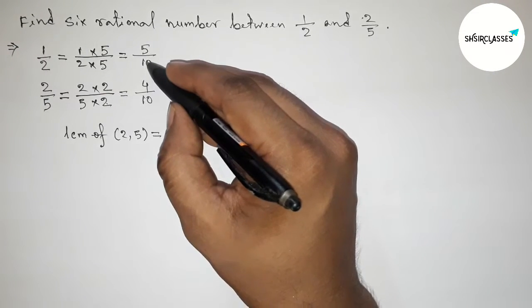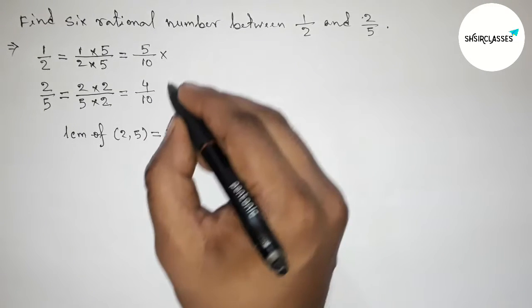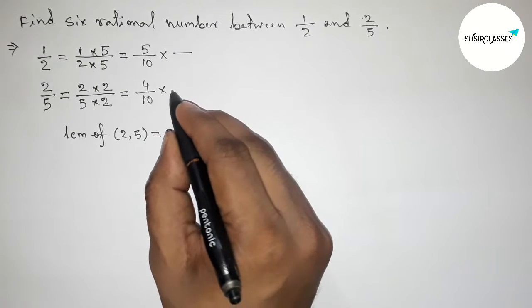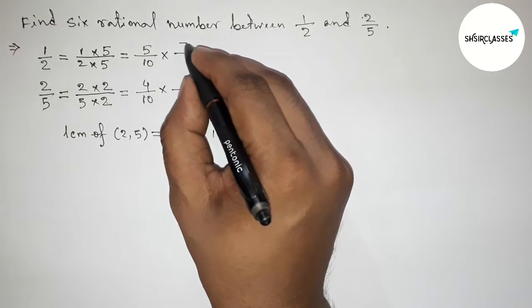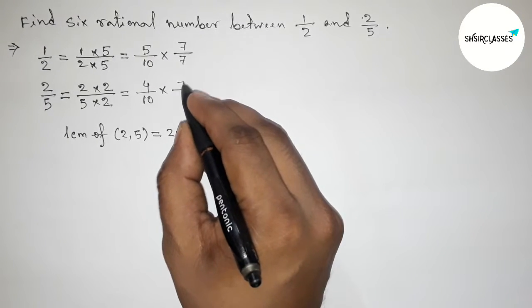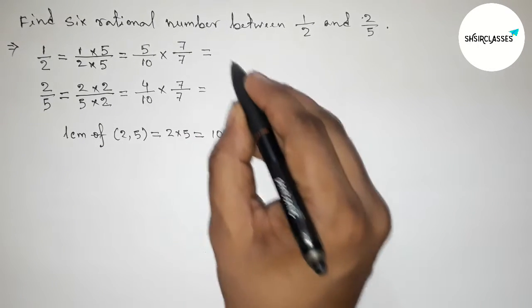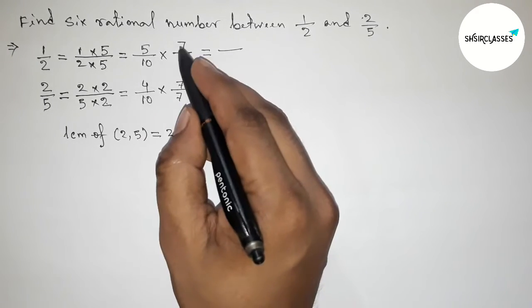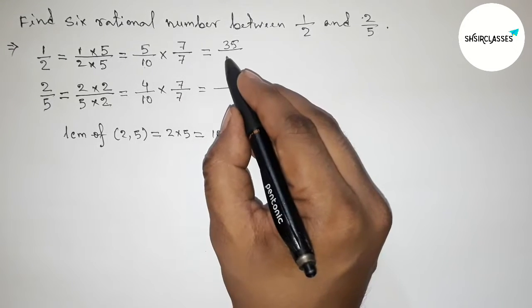Here both the denominators are 10 and equal. Again we have to find 6 rational numbers, so we have to multiply both numbers by a number up and down. Taking here 7, multiply up and down by 7. Now this equals to 7 times 5 is 35 and 10 times 7 is 70, and this is 7 times 4 is 28 by 70.